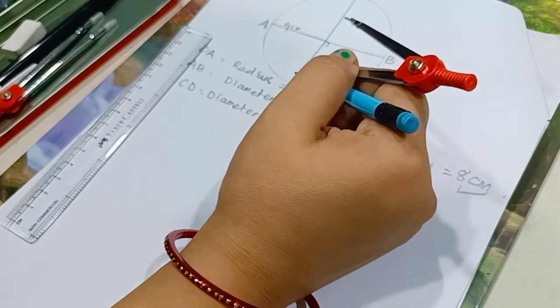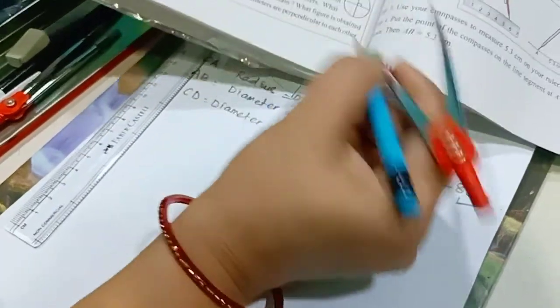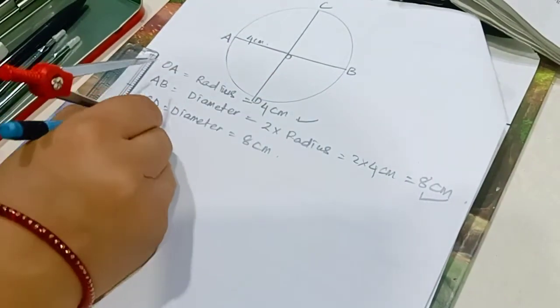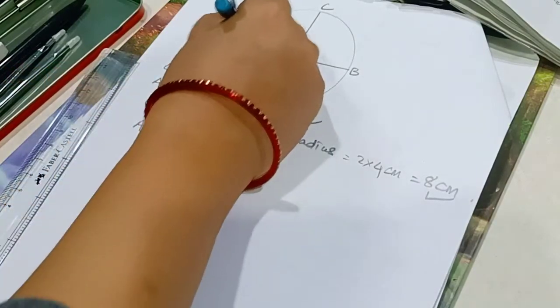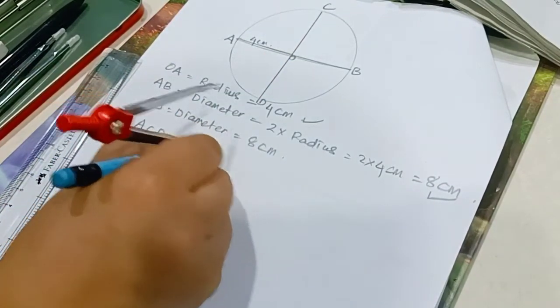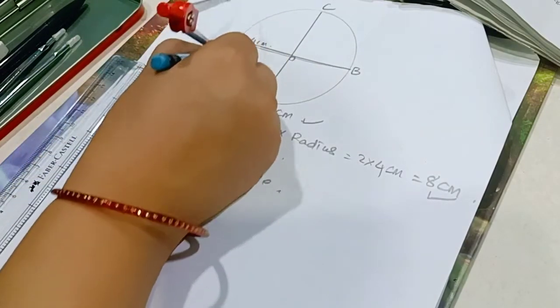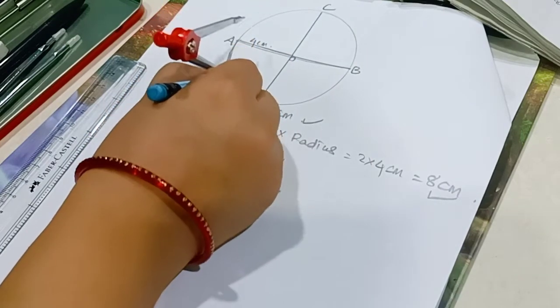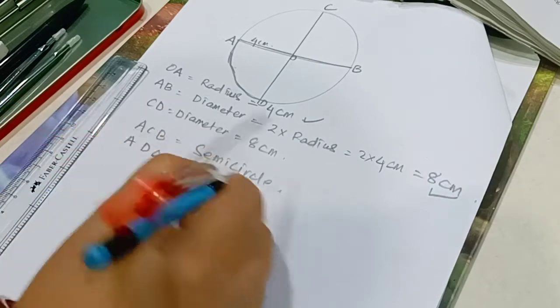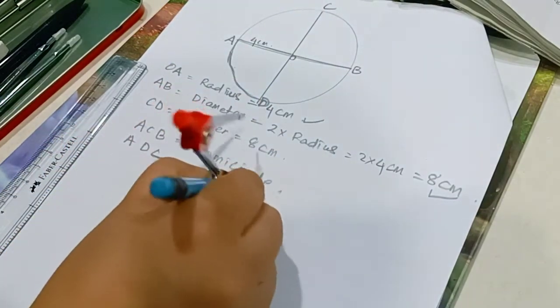Now join the ends of these diameters. What figures do you obtain? This is ACB, this is semicircle. ACB is the semicircle. And ADC, this is D, ADC also semicircle.